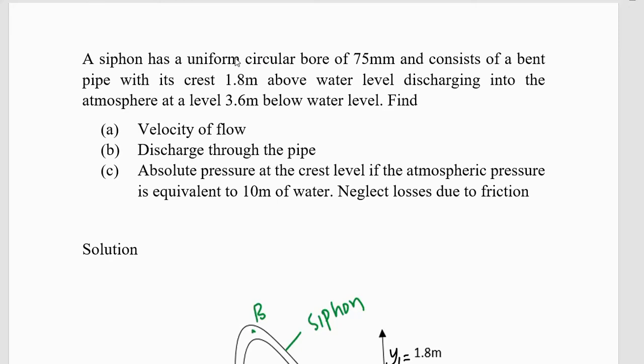In this video, we have a question that is solving a problem on Bernoulli's principle that involves application of a siphon. The guiding question says: a siphon has a uniform circular bore of 75mm and consists of a bent pipe with its crest 1.8m above water level discharging into the atmosphere at a level 3.6m below a water level. Find the velocity of flow discharge through the pipe and the absolute pressure at the crest level if the atmospheric pressure is equivalent to 10m of water and we are told to neglect losses due to friction.